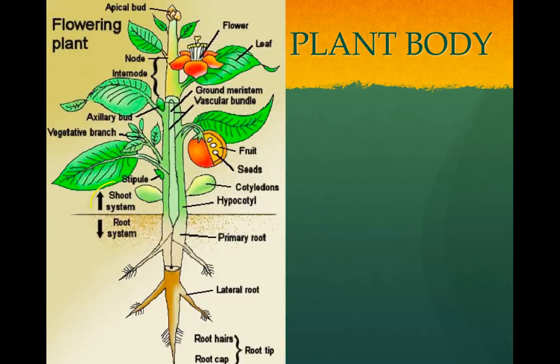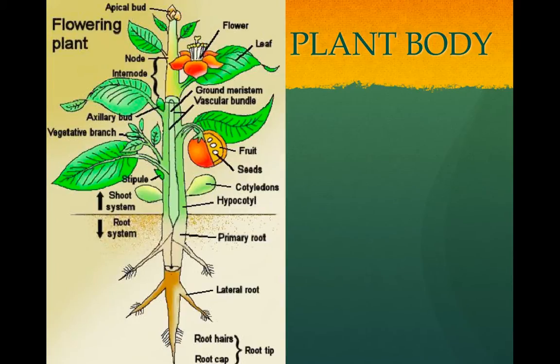The shoots are the above-ground parts, and are primarily made of stems, leaves, and flowers. The stems support the leaves and the flowers. The leaves are mainly for photosynthesis, and the flowers are for reproduction. The buds are underdeveloped shoots — there are terminal buds, which lengthen the plants, and axial buds, which branch the plant.